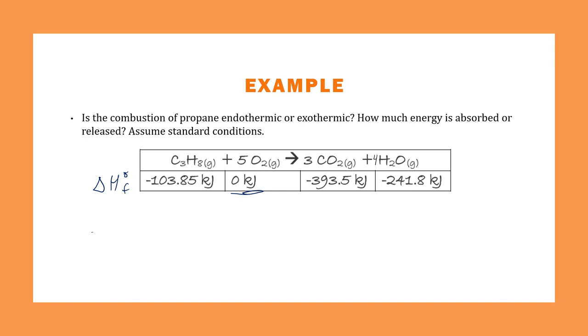So you would want to do products minus reactants. Well, you would do four times the value for gaseous water plus three times the value for carbon dioxide. And so that's your products. And you get negative 2147.7. And then you would do the reactants next. We don't have anything for the oxygen. But we just have one propane.